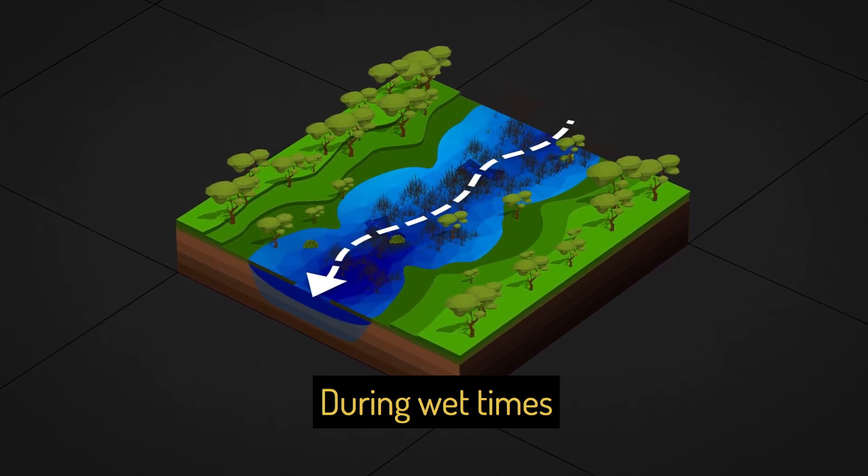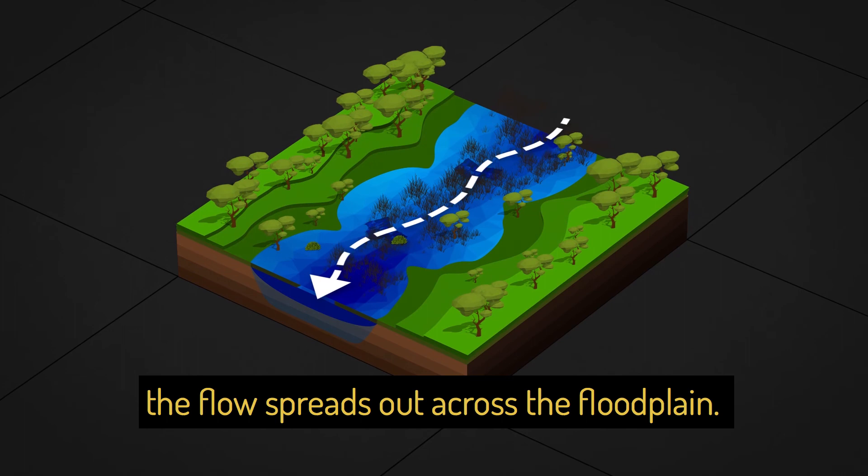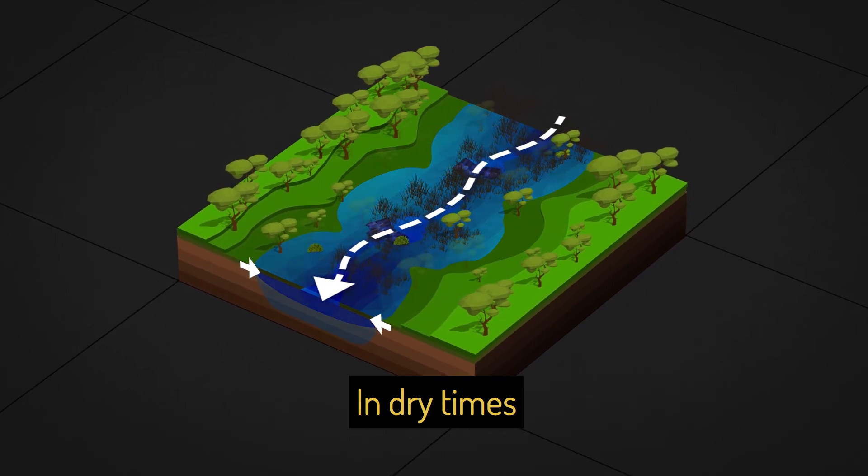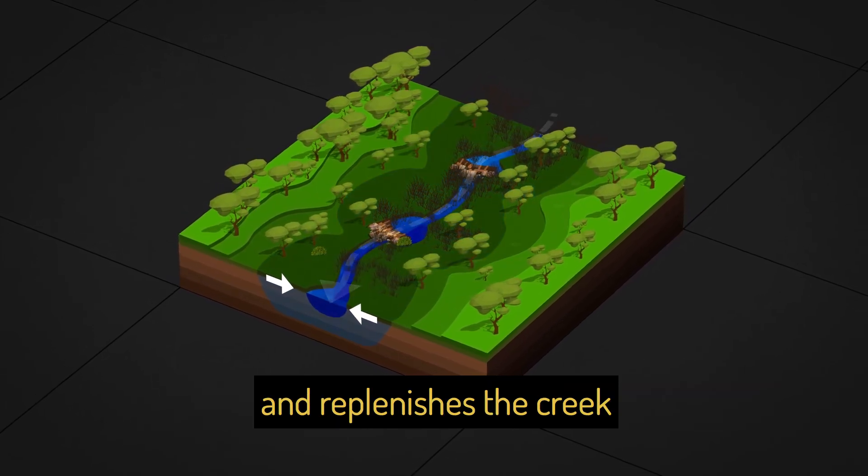During wet times, the flow spreads out across the floodplain. In dry times, the water flow remains beneath the surface and replenishes the creek.